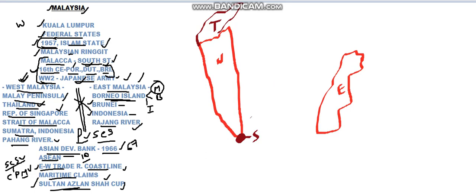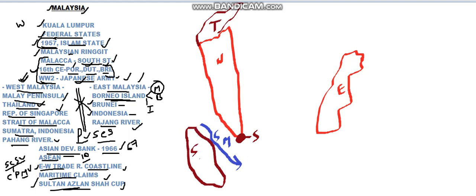These are the two countries bordering western Malaysia. There is a strait called the Strait of Malacca, which is a very major trade route connecting west to east. Across the Strait of Malacca there is an island called Sumatra Island, which belongs to Indonesia. So Indonesia has its maritime border with western Malaysia across the Strait of Malacca.